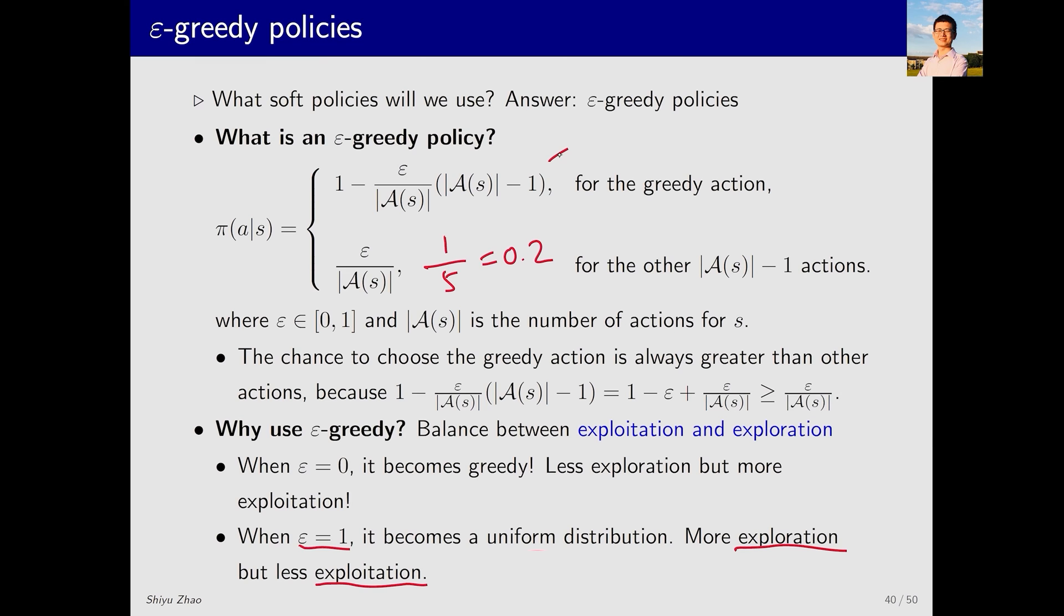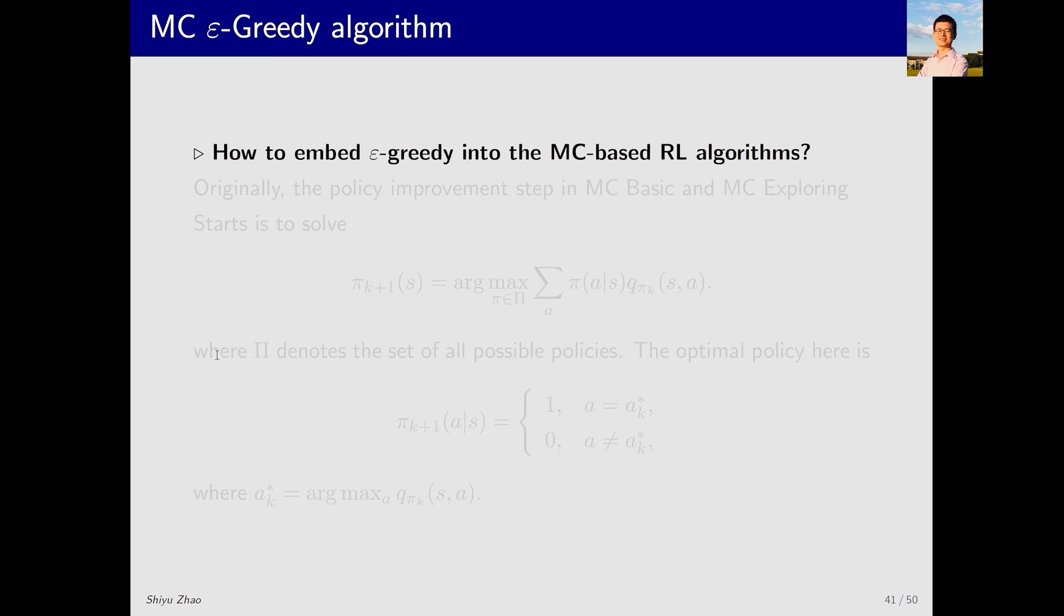This probability is also easy to calculate and it is also 0.2. Consequently, the selection probability for every action is 0.2. We've introduced epsilon greedy. Next, how to embed epsilon greedy into the MC-based RL algorithms. It's actually quite simple.